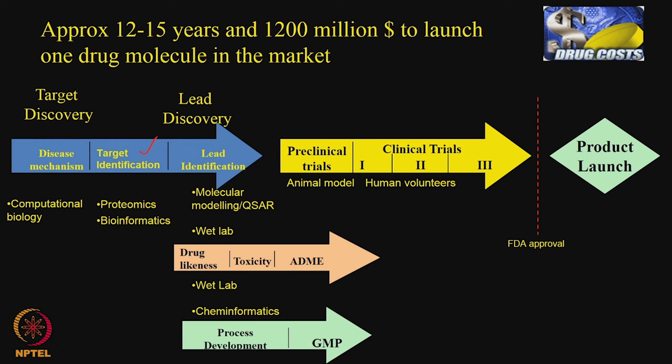Once you have got a target, we go into the lead. The lead is your molecule that has to have certain activity — it goes and binds to the enzyme and makes it inactive, or it goes and binds to a protein and denatures the protein. That is called lead identification. We are going to talk about the various steps involved in target identification and lead identification, and then later we will talk about the drug likeness property.